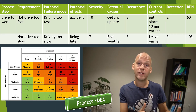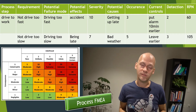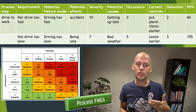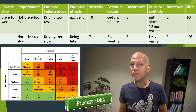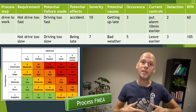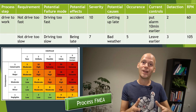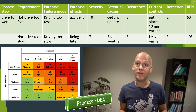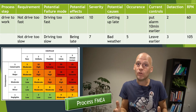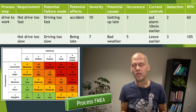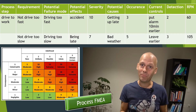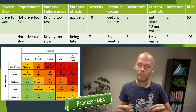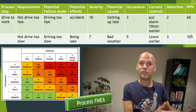Now that we have an accident with severity 10, what could be the potential cause? I want to identify causes so I can fix them and reduce my risk. A potential cause for driving too fast and getting into an accident could be that I get up too late, meaning I feel I have to compensate for lost time. How often does this happen? Occurrence is 10 if it happens all the time and 1 if it almost never happens. Normally I get out of bed on time, but sometimes I'm a little lazier, so I give it a 3. So occurrence is 3 — not all the time, but sometimes.